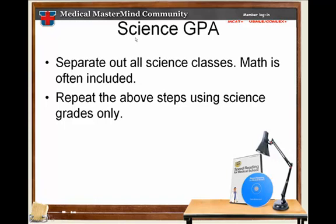The next step that you should do is calculate your science GPA. It's the same process except you're going to go through all of your transcripts and separate out all of your science classes. I used to calculate mine with and without math. Things like calculus in some schools are considered science courses too. They should be. So I would include math, and then repeat all the steps that you did before.